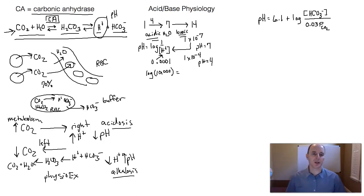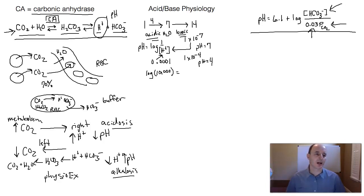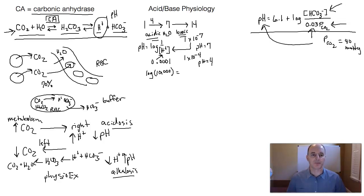Another thing I want to introduce you to is the Henderson-Hasselbalch equation: pH is equal to 6.1 plus the log of the bicarbonate concentration divided by 0.03 — the solubility constant for carbon dioxide — times pCO2, which represents the partial pressure of carbon dioxide in our circulatory system. On average, the partial pressure of CO2 in circulation is about 40 millimeters of mercury, and 0.03 is a constant. This equation allows us to calculate pH if we know the bicarbonate concentration and the partial pressure of CO2.